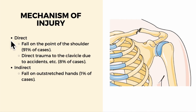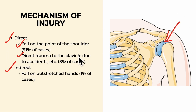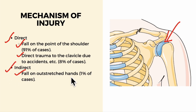We have direct and indirect mechanisms of injury. Under the direct mechanism we have fall on the point of the shoulder, and also direct trauma to the clavicle due to accidents, which make up eight percent of the cases. The indirect mechanism of injury is fall on an outstretched hand, which makes up only one percent of the total cases.